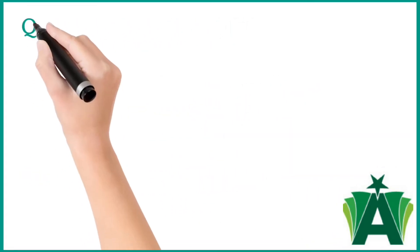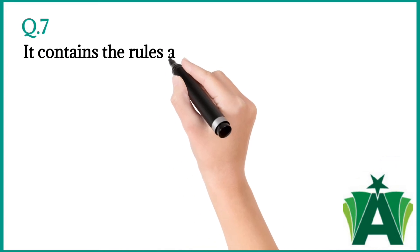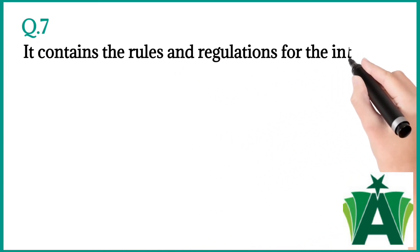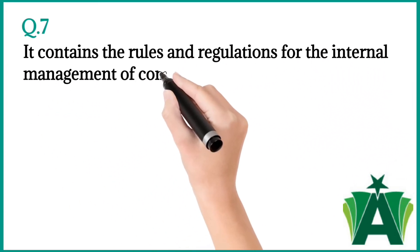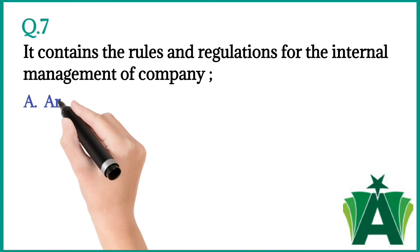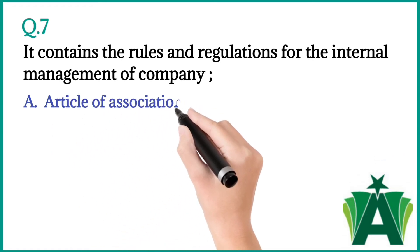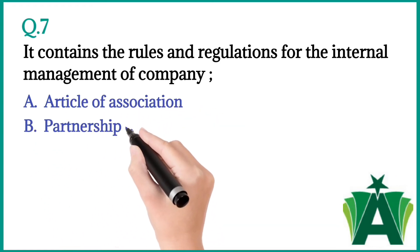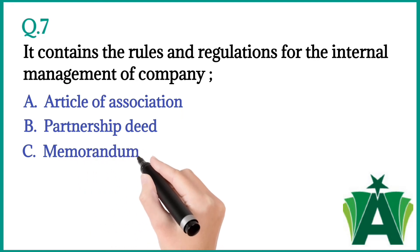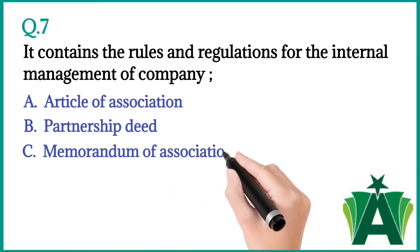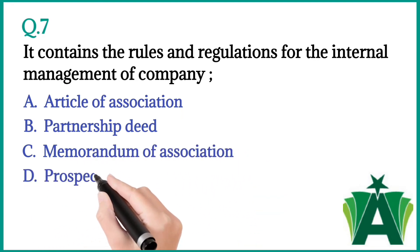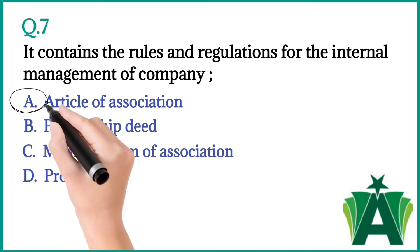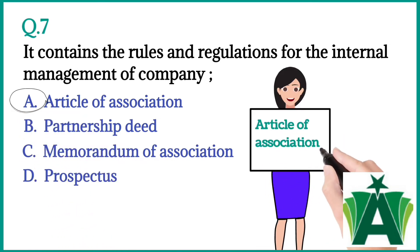Question number seven: It contains the rules and regulations for the internal management of a company — a) Article of Association, b) Partnership deed, c) Memorandum of Association, d) Prospectus. The correct answer is a) Article of Association.